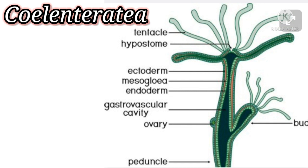The tentacles bear stinging cells called cnidoblast or nematocyst. Many coelenterates exhibit polymorphism, meaning many structural forms. They reproduce both sexually and asexually. Example: Hydra. Coelenterates are called diploblastic animals because they have two layers — the ectoderm and the endoderm.